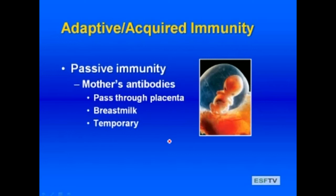That wraps up our innate immune response. We're now going to start talking about the adaptive and acquired immune response. Innate immunity is a mechanism of defense that does not depend on prior exposure, whereas adaptive immunity is predicated on prior exposure to a specific pathogen — to a particular non-self material. It requires time to develop, and our vaccination programs are based on this adaptive acquired immunity.